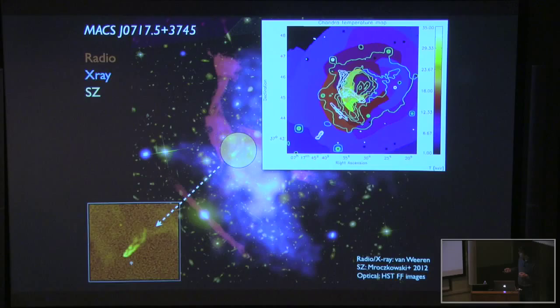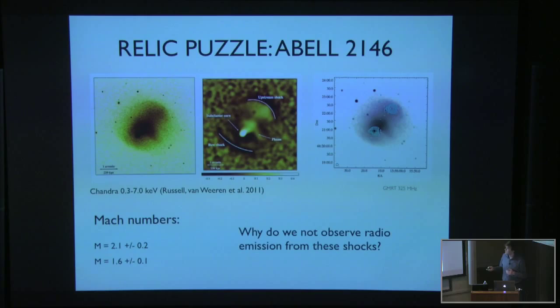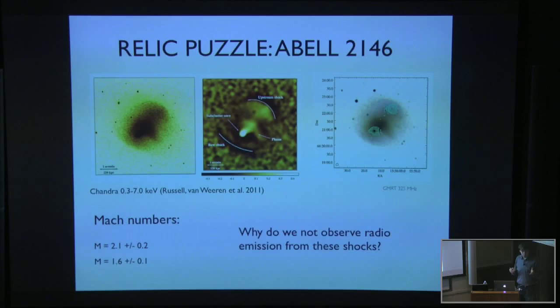There are some other puzzles. This is cluster ABLE2146, where you can see two nice symmetric shocks on both sides. We did very deep GMRT observations to look for relics, because we saw shocks and expected relics - kind of an easy case with Mach numbers of around two. But we did not find any relics. So a big puzzle: why do these shocks not accelerate particles? These were really deep, targeted GMRT observations at low frequencies, but nothing was found. It's not clear why these shocks do not accelerate particles. In a re-acceleration model, you can think maybe there was not a nearby radio galaxy present - but how do you prove this? This is still a mystery.